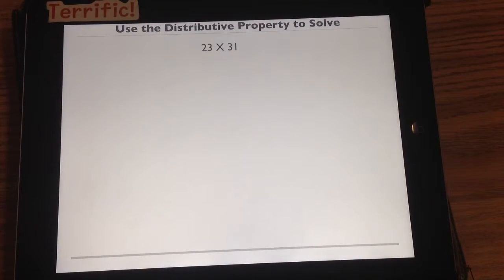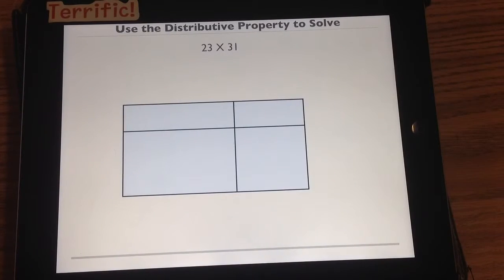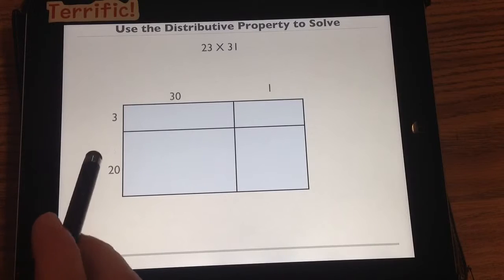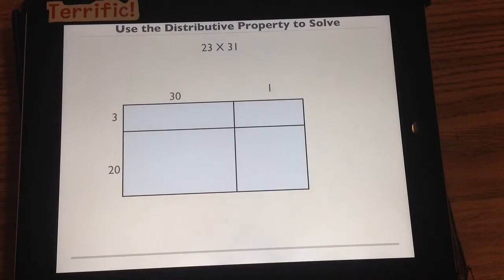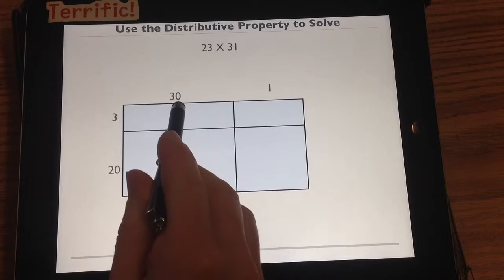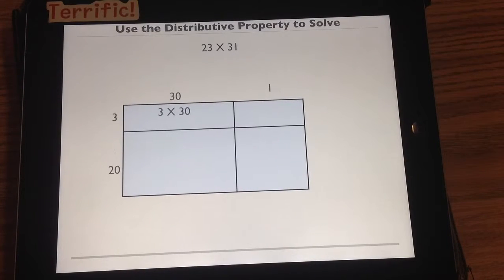That's what we're going to move into next. We're going to use a distributive property to solve this problem using our area model. So here's our area model. We'll break up our 23 and our 31. 23 broke into 20 and 3. 31 broke into 30 and 1. Multiplication, 3 times 30. Unit form, 3 ones times 3 tens.